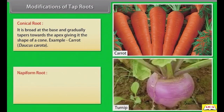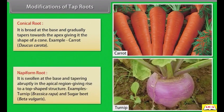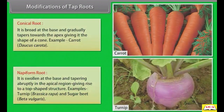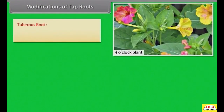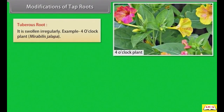Napiform root: swollen at the base and tapering abruptly in the apical region, giving rise to a top-shaped structure. Examples: turnip (Brassica rapa) and sugar beet (Beta vulgaris). Tuberous root: swollen irregularly. Example: four o'clock plant (Mirabilis jalapa).